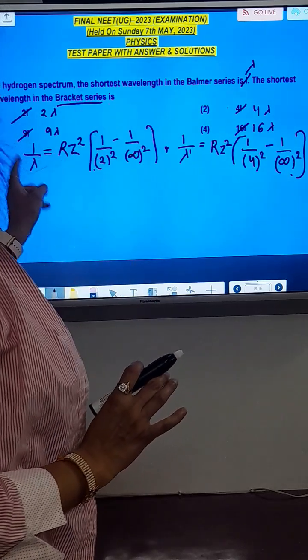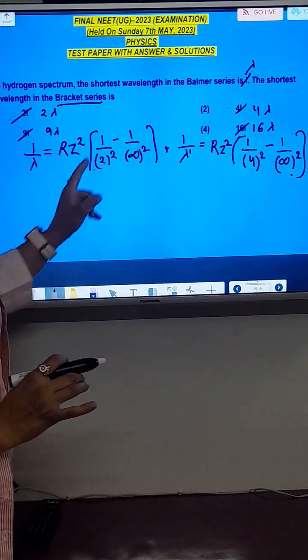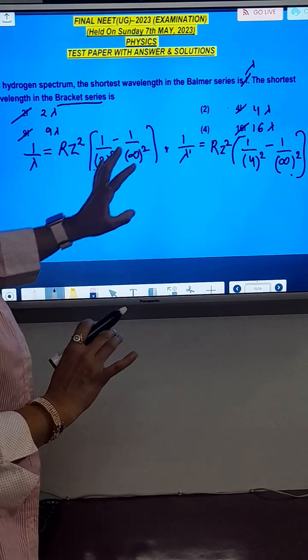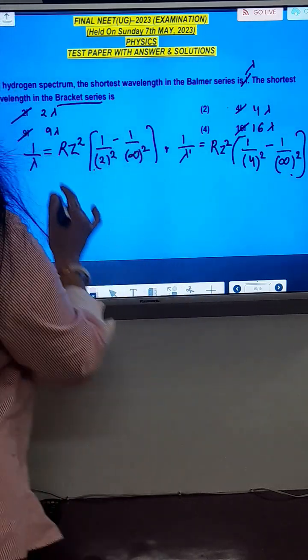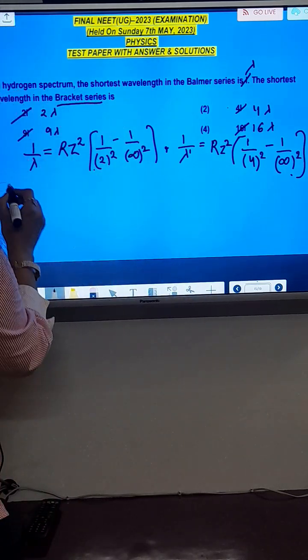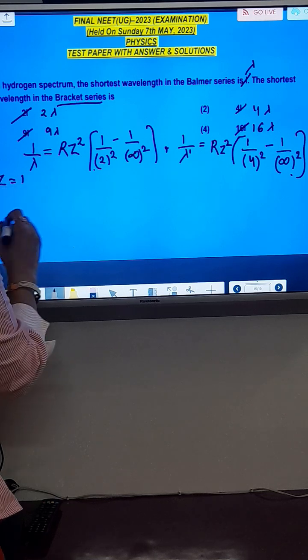You should know the Balmer series formula: 1 by lambda equals R Z square, 1 upon 2 square minus 1 upon infinity square. Here, hydrogen spectrum is given, so the value of Z becomes 1.